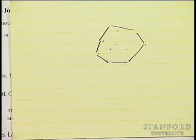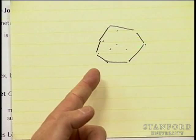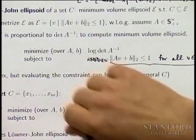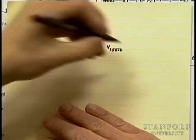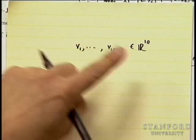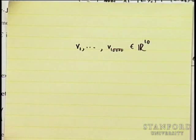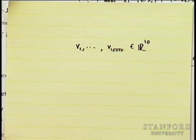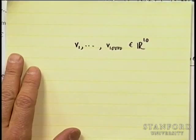This minimum volume ellipsoid has huge applications. Here's a beautiful one: suppose you have V1 through V_10000, vector measurements in R^10, and you want to check for outliers — are there measurements that stand way out from the rest?